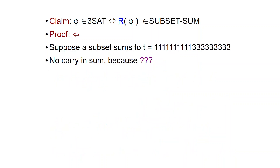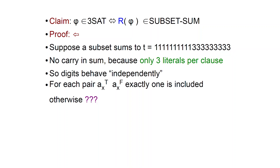Now let's argue in the other direction. We don't have an assignment to start with — we have a subset that sums to our target t. The first observation is that when you perform the sum of these numbers, you don't have any carry: the digits behave independently. That's because you only have three literals per clause, so no digit can overflow.